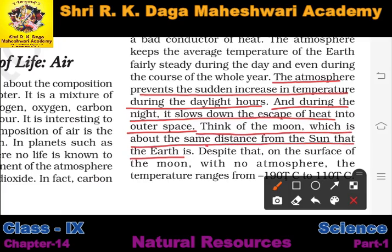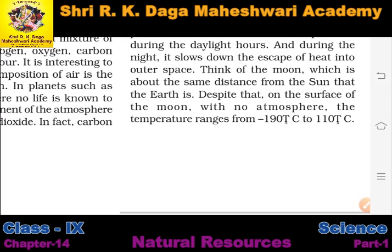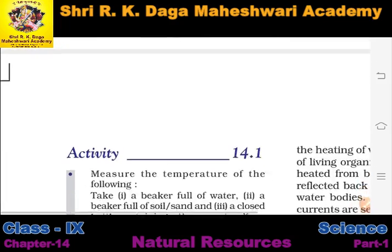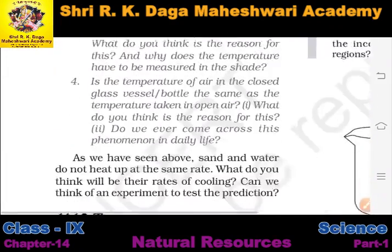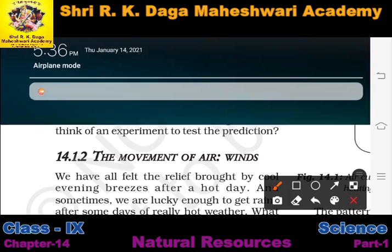Think of the moon, which is about the same distance from the sun as Earth. On the surface of the moon, with no atmosphere, the temperature ranges from minus 190°C to 110°C. Because the moon has no atmosphere, its temperature is extreme — this shows that it is the atmosphere that controls Earth's temperature.